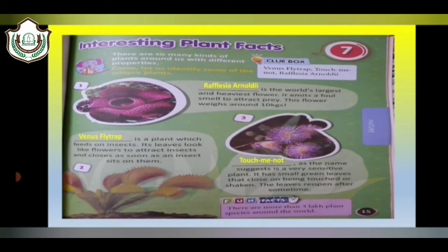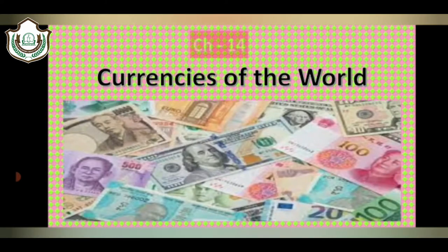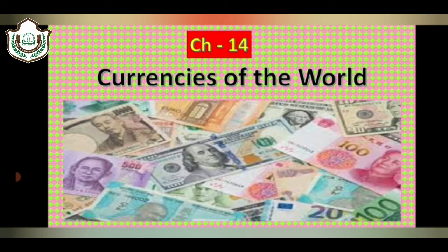Here we have ended up with chapter number 7. The next chapter number is 14, which talks about currencies of different countries. Every country in the world uses a different currency. Some countries also have the same currencies. What is currency? Currency is the system of money being used in a particular country. Have you seen the currency of your country?